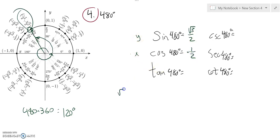Tangent is y over x, so it's root 3 over 2 over negative 1 half. The 1 half's divide out. So I have root 3 divided by negative 1, which is negative root 3.